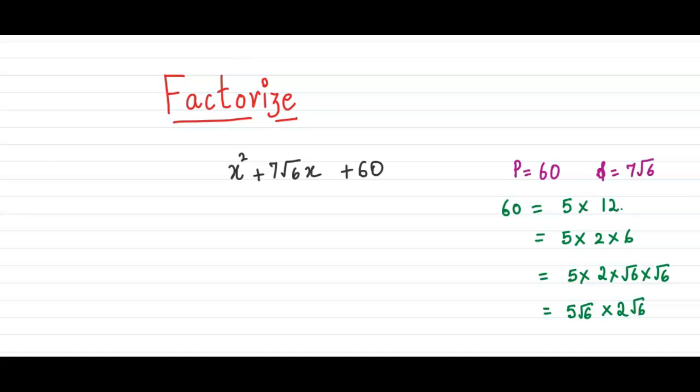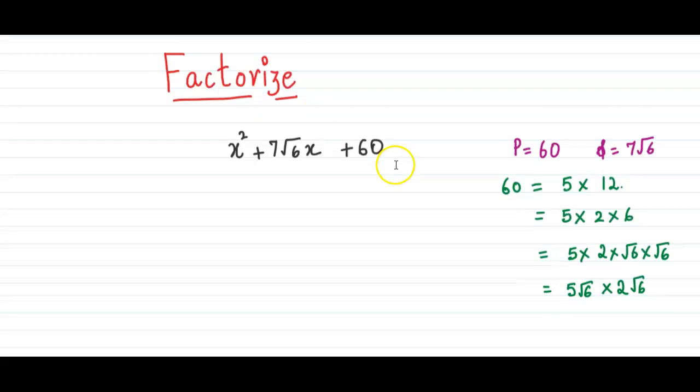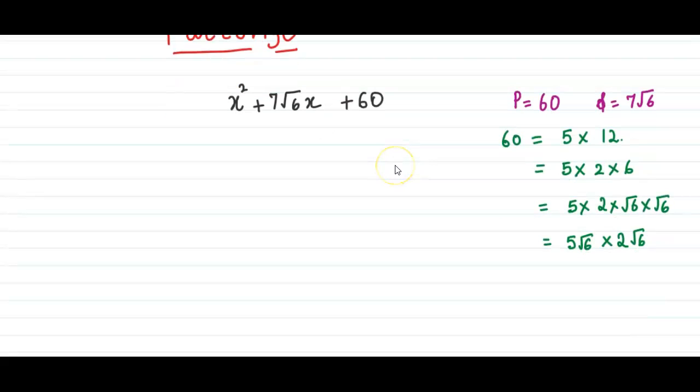So notice, the sum of 5 times under root 6 and 2 times under root 6 is 7 times under root 6. So that means, these are the two factors in which we can split 60 and the sum is 7.